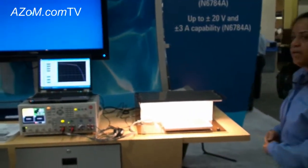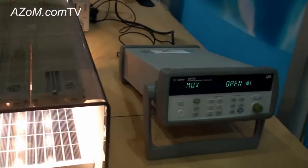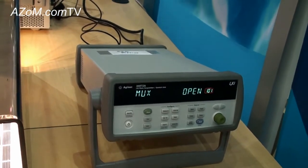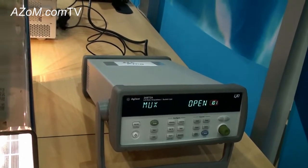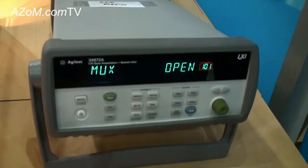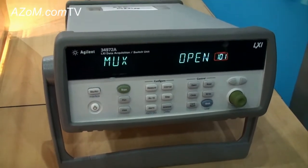...is a 34972A data acquisition unit here, and this product will help also measure other physical parameters of the solar cell like temperature, because one of the things that can erode the efficiency of a solar cell is a temperature difference that can cause problems in terms of its operation in its environment.